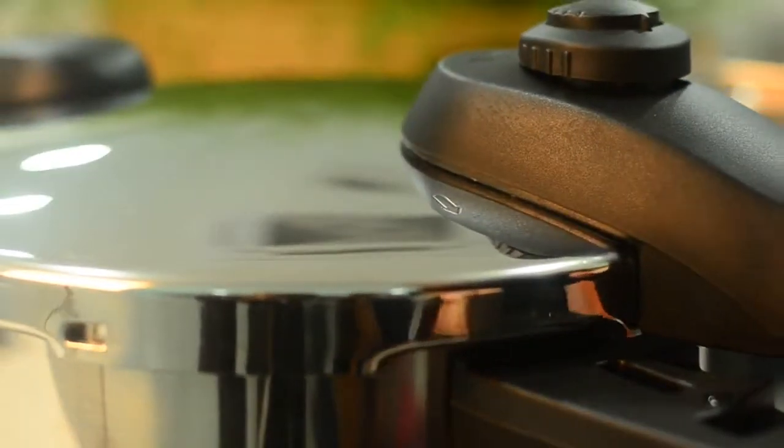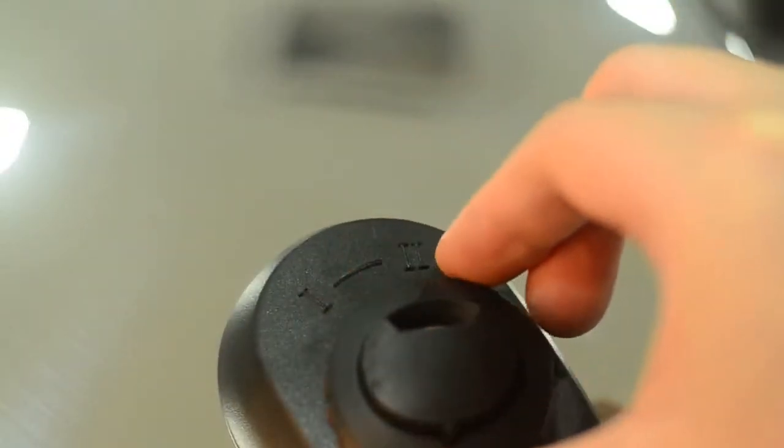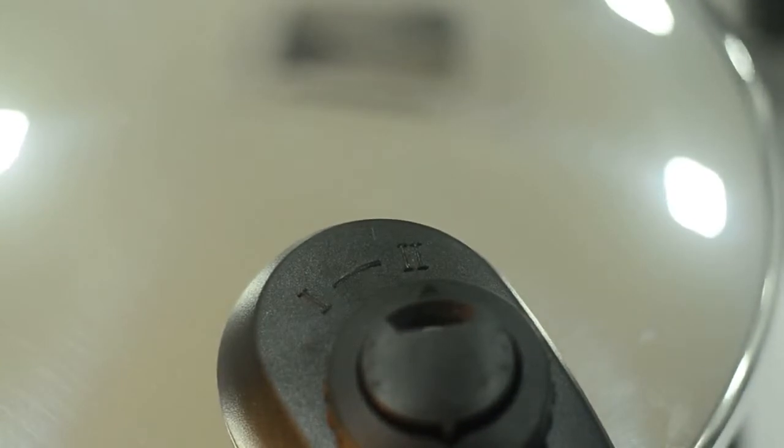Once done, close the lid clockwise like this until you hear this click sound. Next, turn the valve indicator to position 2, then switch on the stove.